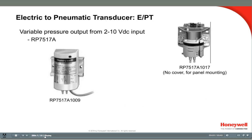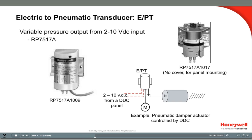Another form of an electric-to-pneumatic relay is the E-to-P transducer. This device receives a 2 to 10 proportional electric signal and outputs a matching proportional pneumatic air signal. In this example, a DDC panel is controlling the damper actuator via the pneumatic transducer. The DDC system sends a 2 to 10 volt DC control signal to the transducer, which is connected to a pneumatic damper, so it opens proportionally with the 2 to 10 volt signal. This type of application is often referred to as a hybrid system.